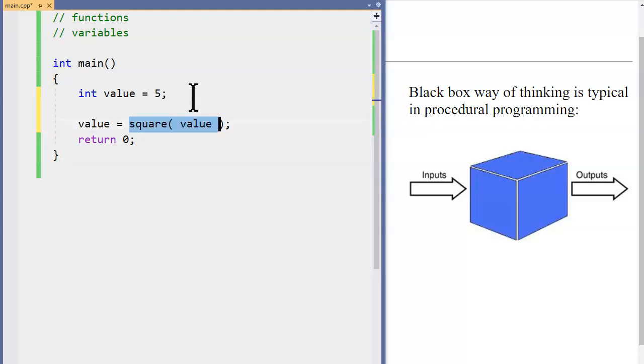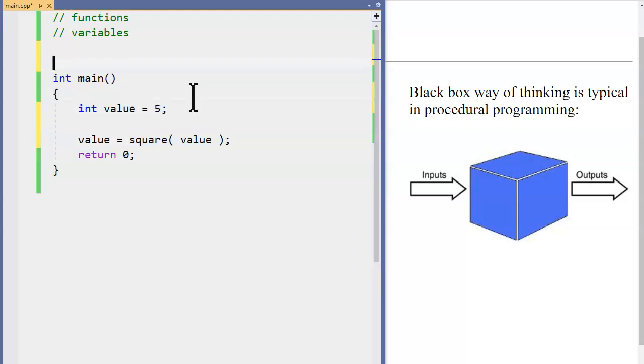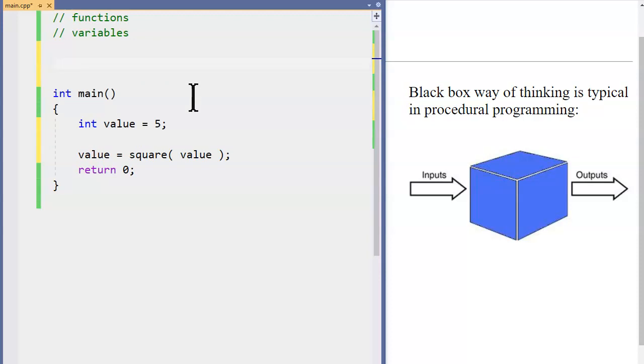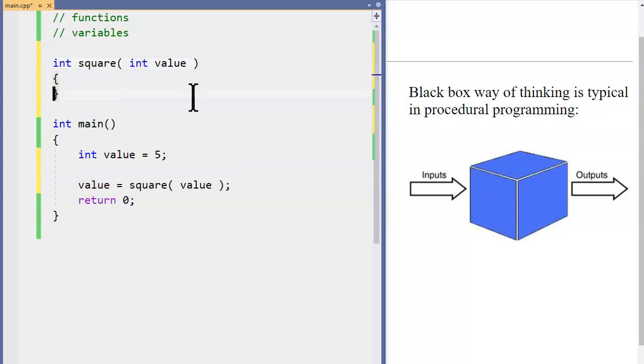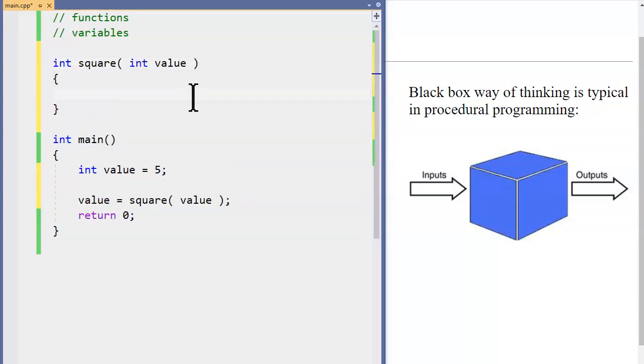Square is an example of another function. If I'd like to have another function in this program, I need to define it. I will define it like this, and in its body here I will say return value multiplied by itself.